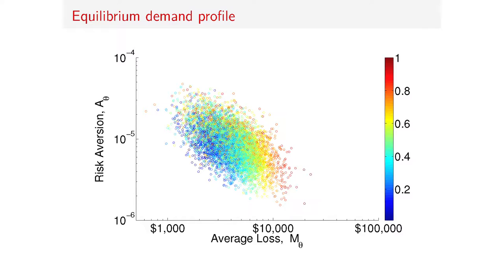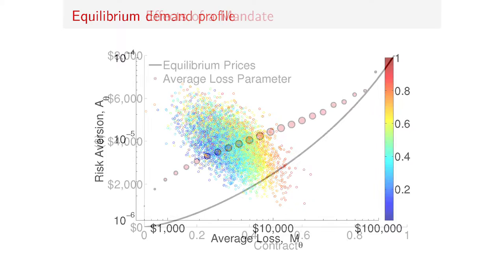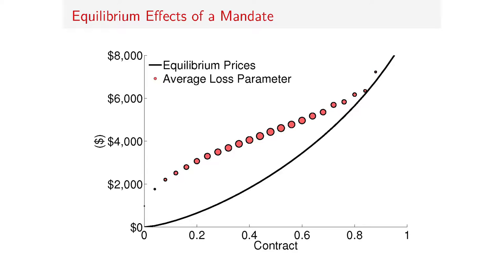To clarify what's going on, I draw the demand profile as a scatter plot where the x-axis is each consumer's average loss and the y-axis is risk aversion. People who are more risk averse or have a higher expected loss purchase more insurance. You also see some dots that seem out of place because I only drew two dimensions of heterogeneity—maybe that consumer had a really high moral hazard parameter. Now let's use this model to understand the equilibrium effects of a mandate.